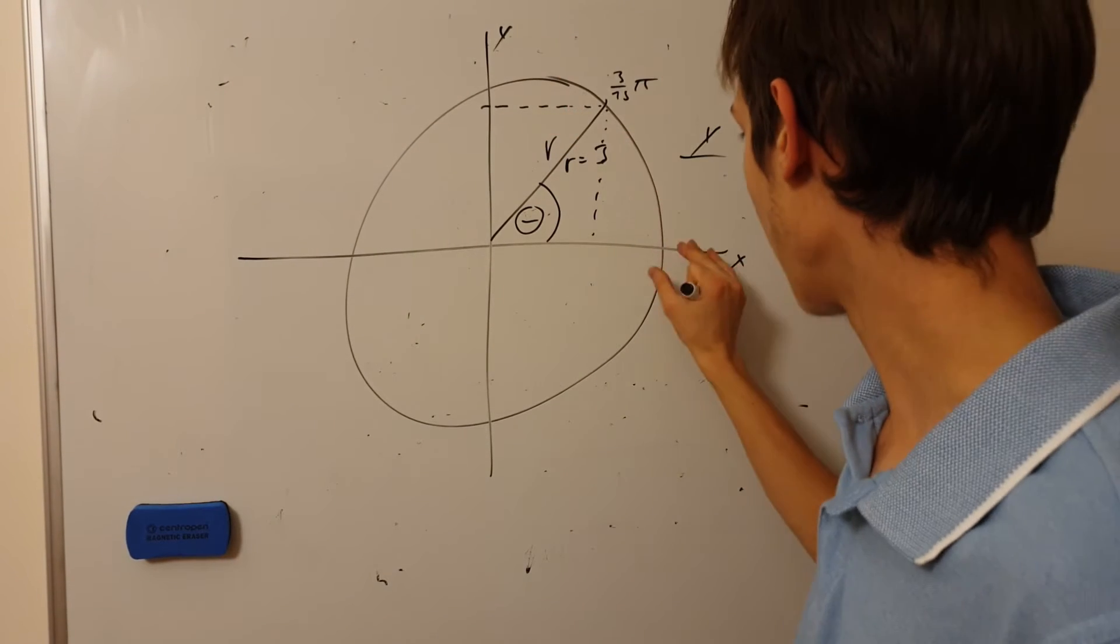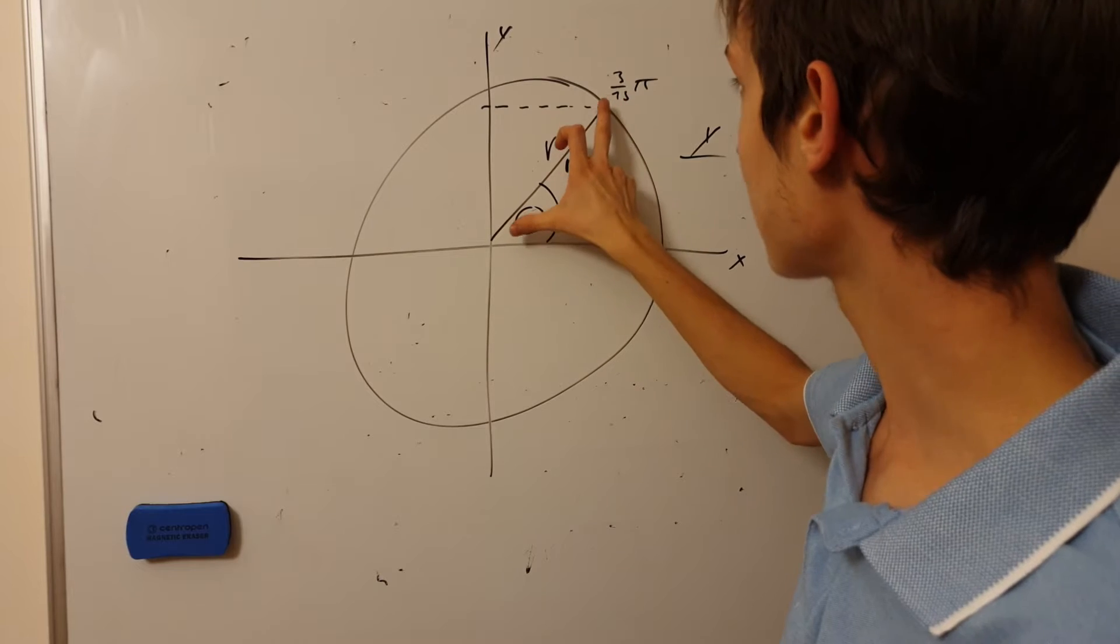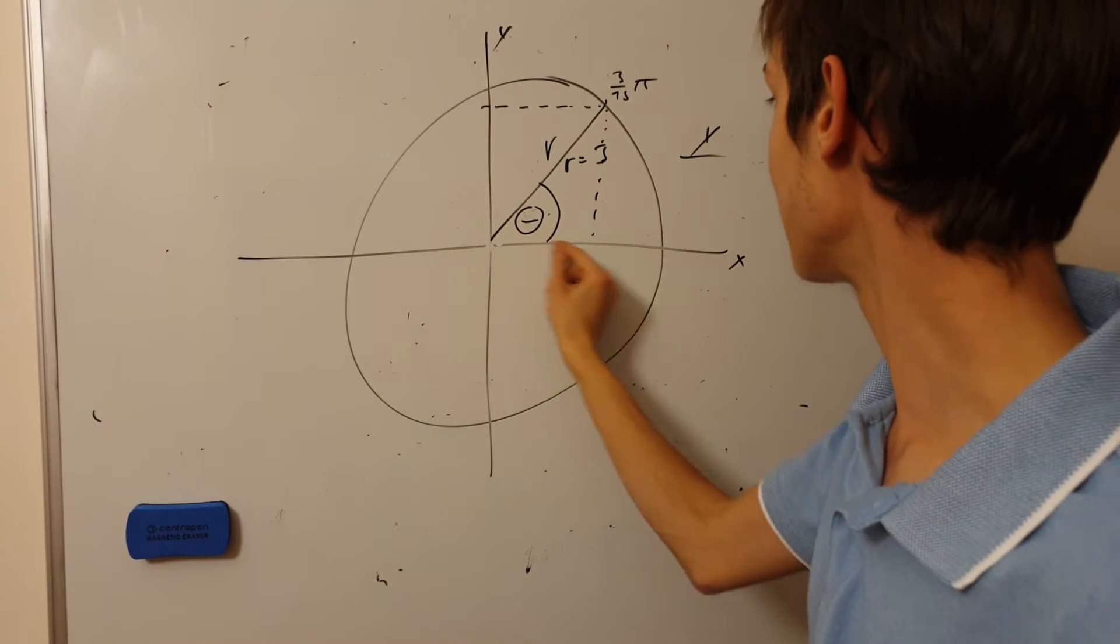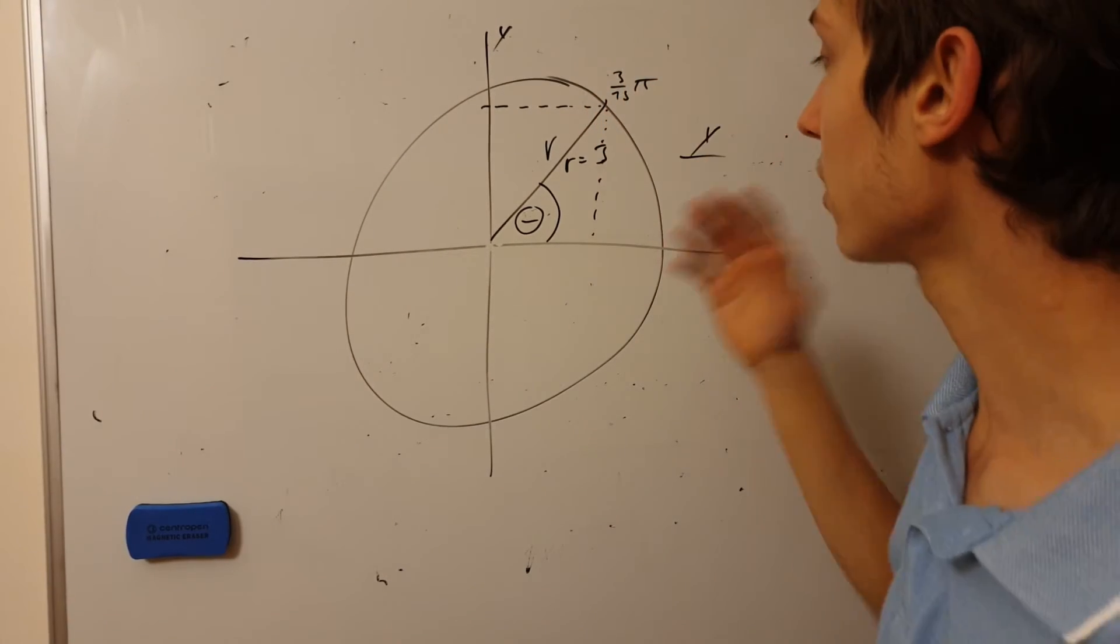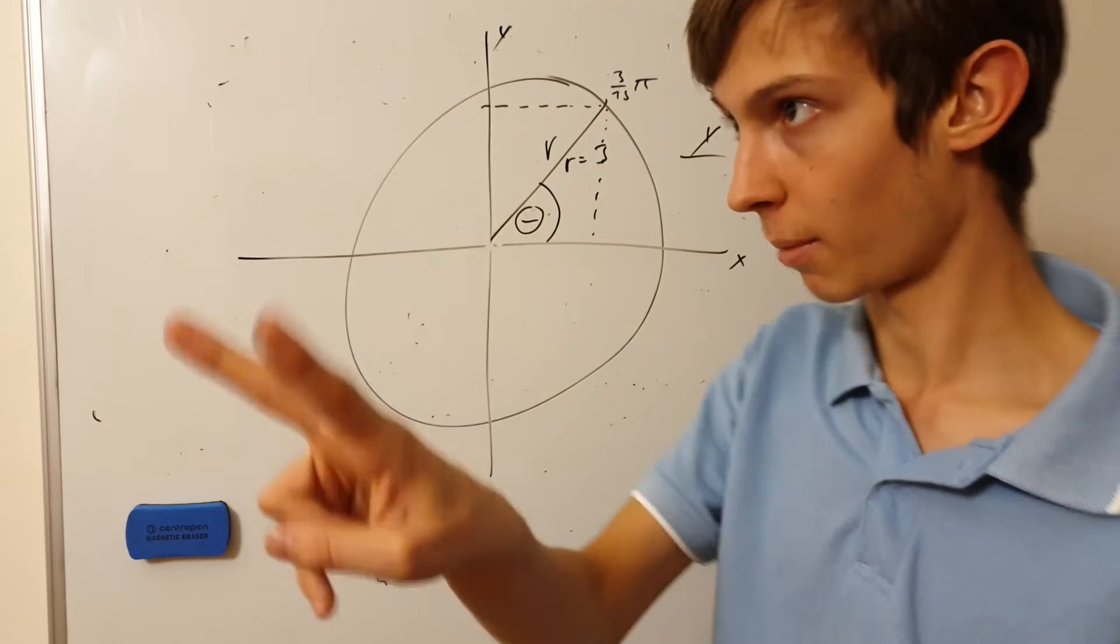Polar coordinates, instead of saying something for x, something for y, you just say it's this radius away from the origin, which is this point in the middle, and it's this angle from the positive x-axis. So the polar coordinates also have two defining pieces of information.